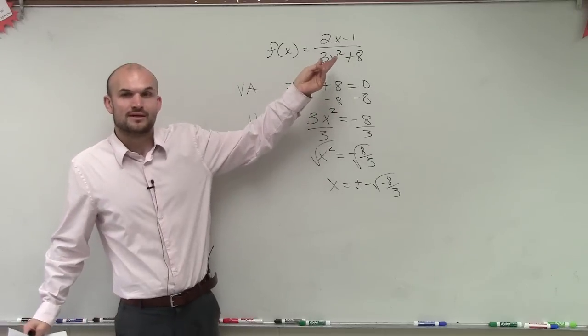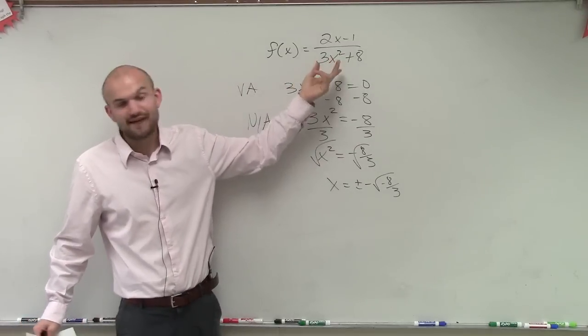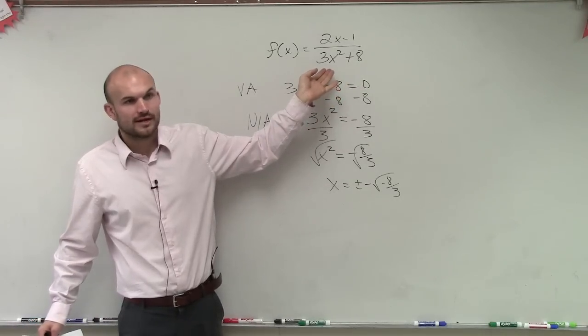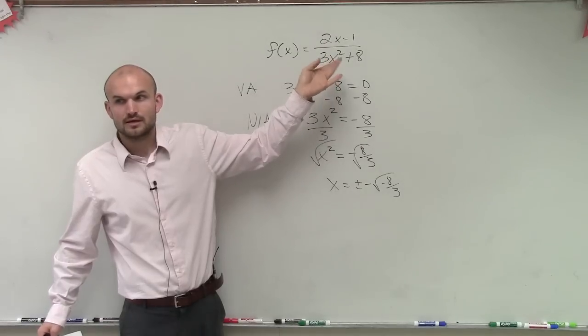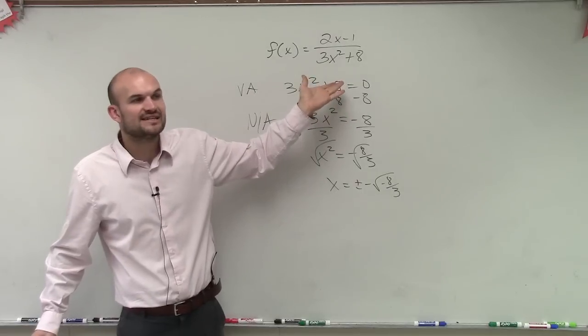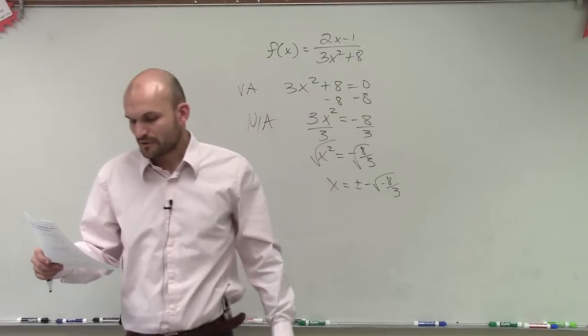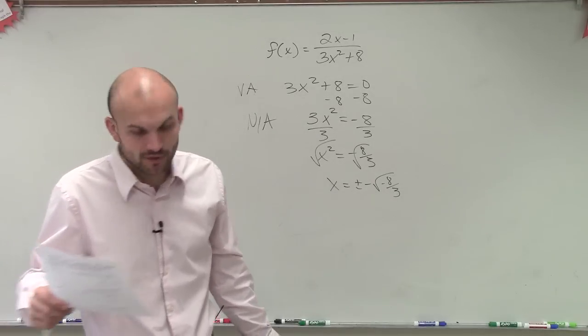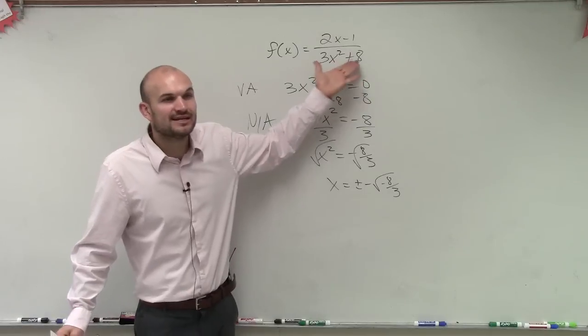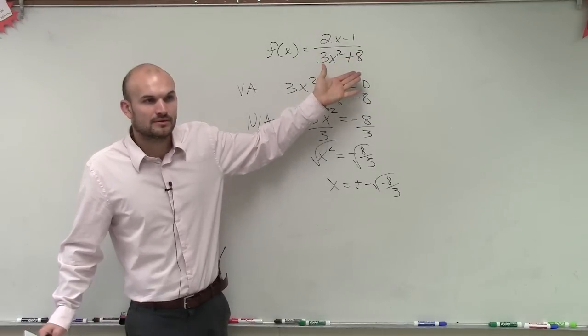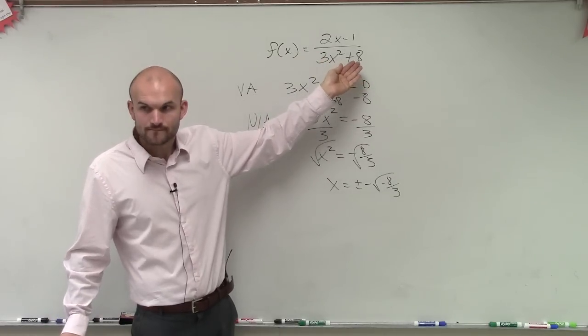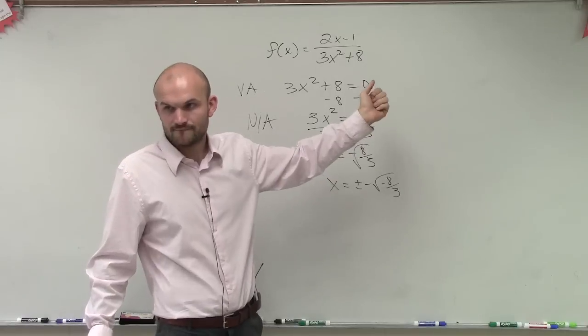Look at our denominator. Doesn't matter what number I plug in for x. Is there ever going to be a problem for it to be 0? No, right? No matter what number you plug in there, this is never, ever going to be 0. So therefore, we do not have any discontinuities. So when I ask for removable discontinuities, they're not applicable. Non-removable, not applicable, because you're never, ever going to get 0 in the denominator. No matter what number you plug in here, you never, ever will get 0, OK?